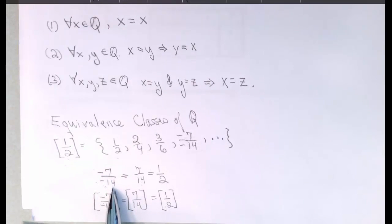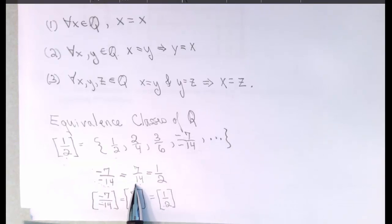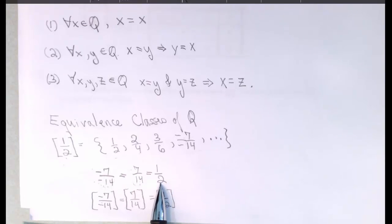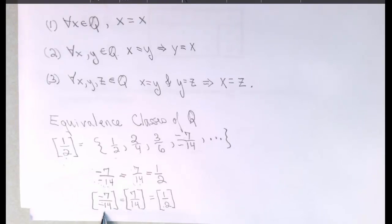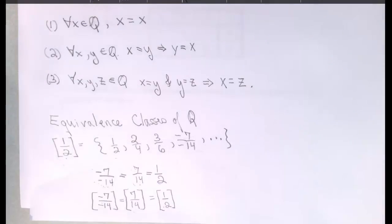If we start with minus seven over minus fourteen, we might first cancel out the negative between the numerator and the denominator, arriving at seven-fourteenths. Then we could divide the seven out of the numerator and the denominator to get one-half. When we do that, we're making a claim about classes that have infinitely many objects. We're saying the equivalence class of minus seven over minus fourteen is the same as the equivalence class of seven-fourteenths, which is the same as the equivalence class of one-half. These numbers are all representatives of one single set.